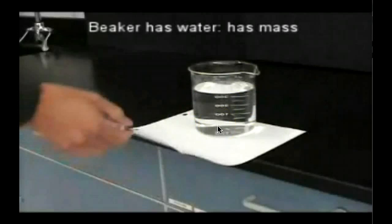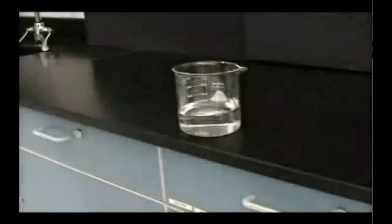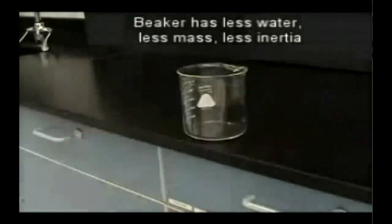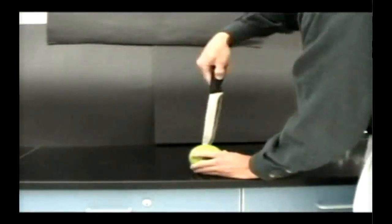What you'll see is that the beaker moves more and more with the paper the less water is in there. And what this tells us is that the more mass an object has, the more inertia it has, the more it has a tendency to keep doing what it's doing. So there you can see it barely moved. With less water, it moves a little bit more, and then with no water it moves noticeably as well.